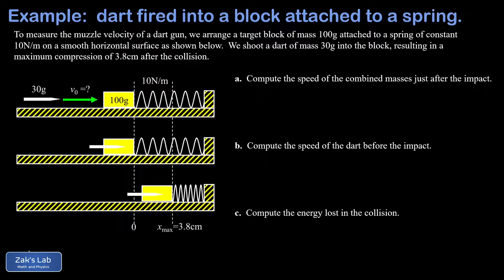All the way back to the initial speed of the dart. In part A, we're asked to compute the speed of the combined masses just after the impact. We're comparing the second picture to the third picture and working our way backwards. We have the maximum compression of that spring storing spring potential energy that came from the kinetic energy of the combined masses after the impact being converted into spring potential energy.